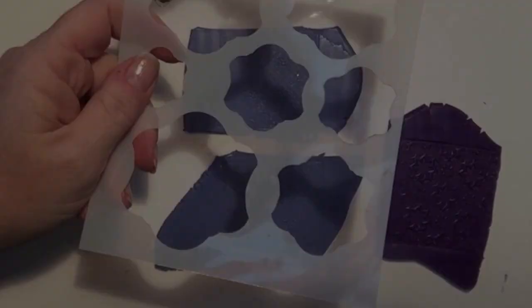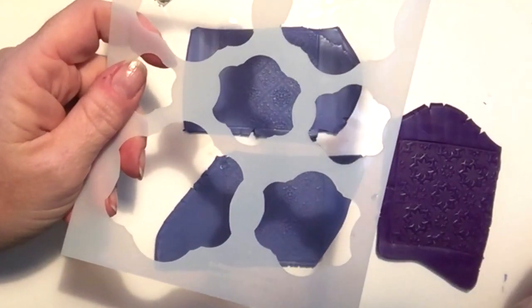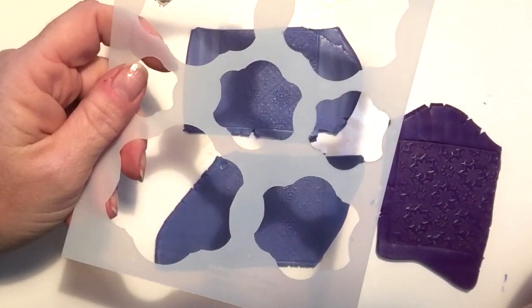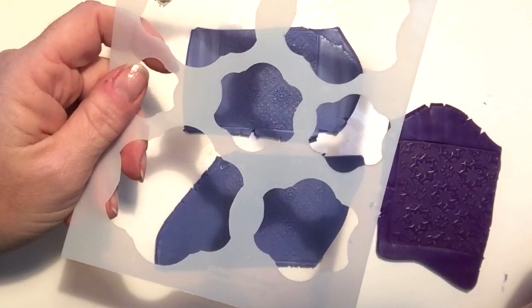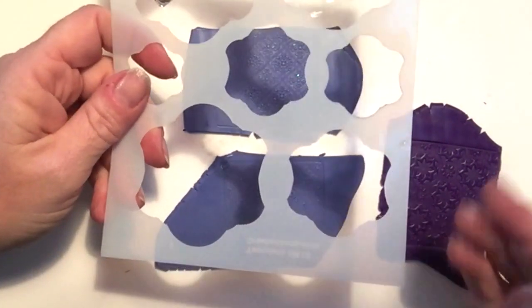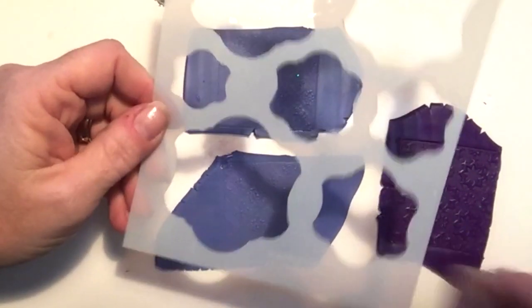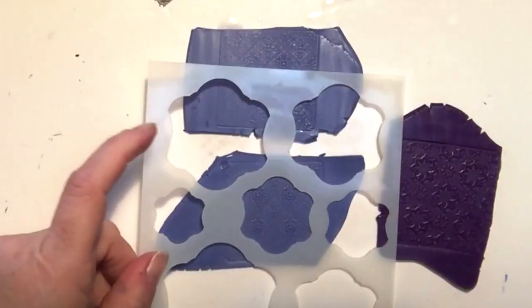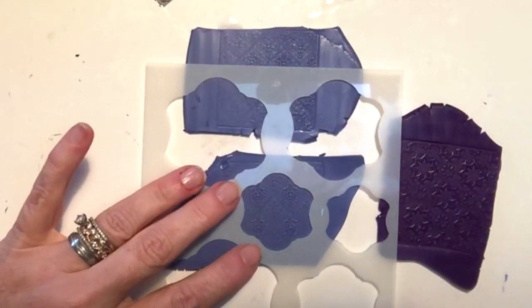To cut the pieces for the bracelet itself I'm using the tag template that came in the kit this month. I just chose the size that I wanted my pieces to be, placed the template on top of the clay and then used a craft knife to cut out each of the elements. I did this for the textured and the silkscreened pieces.